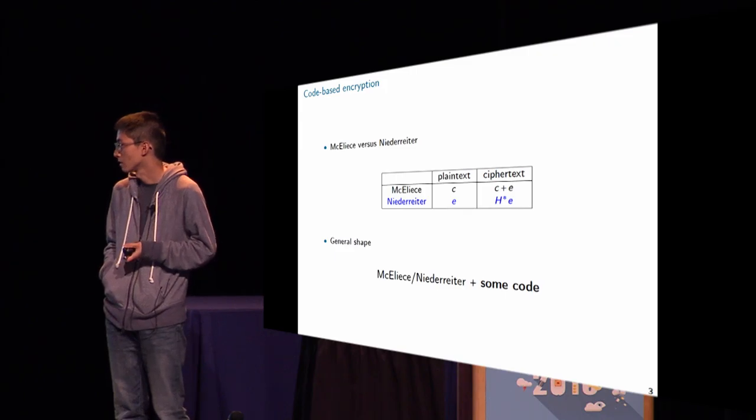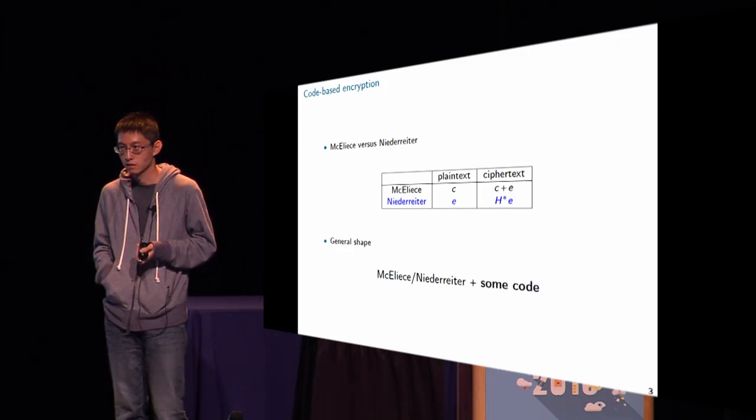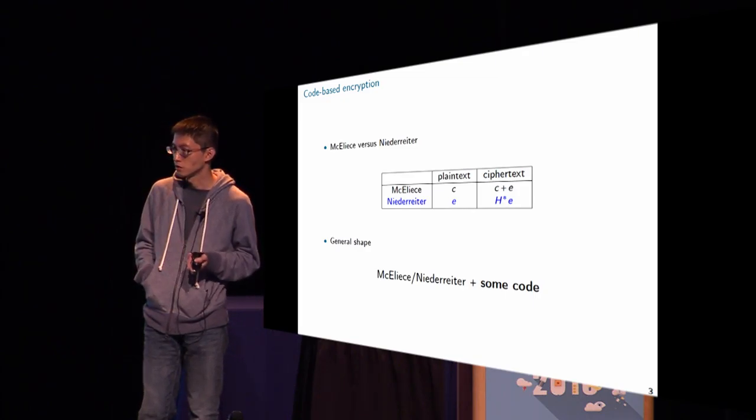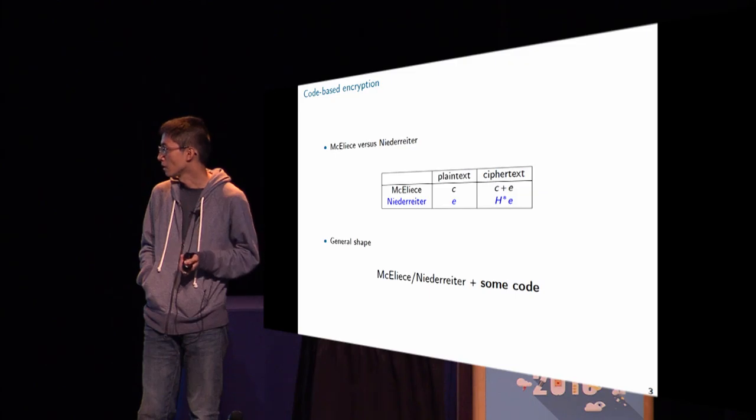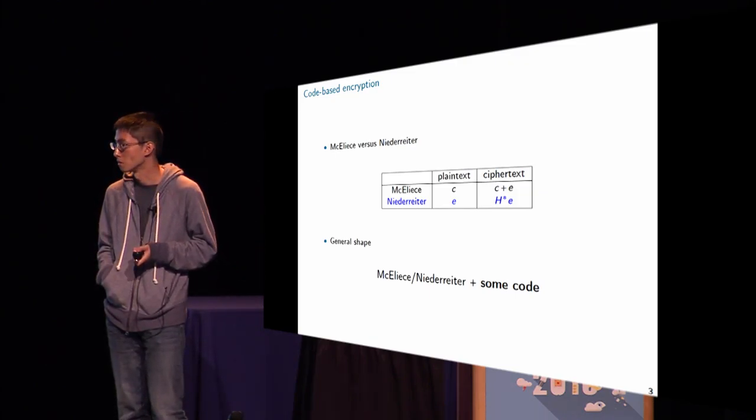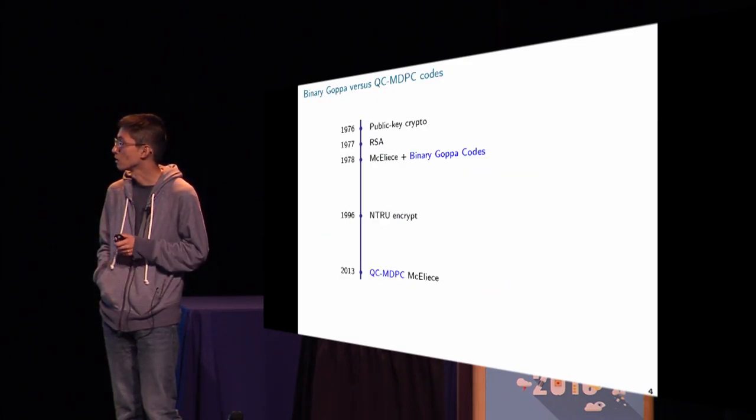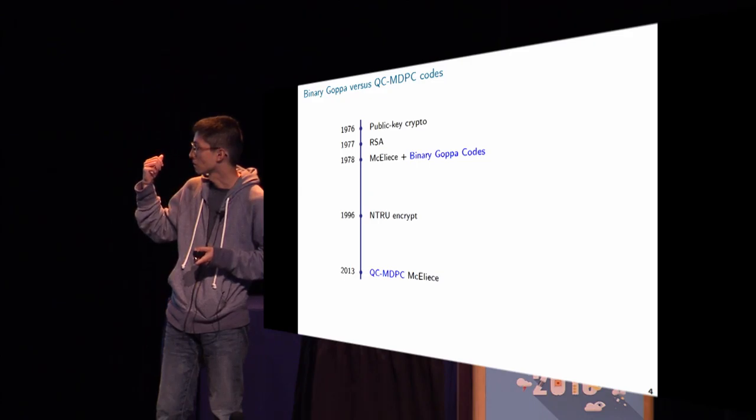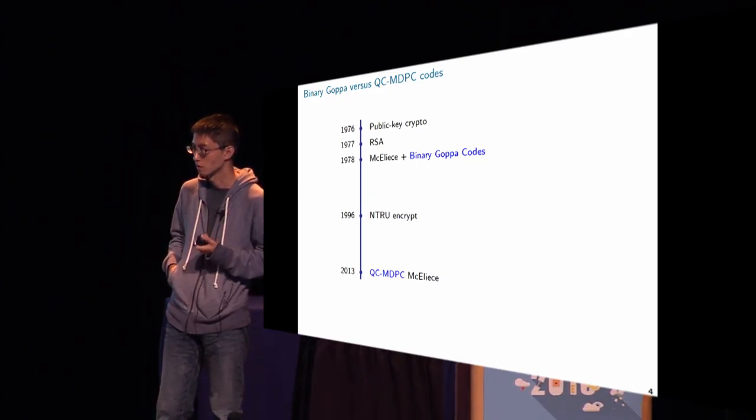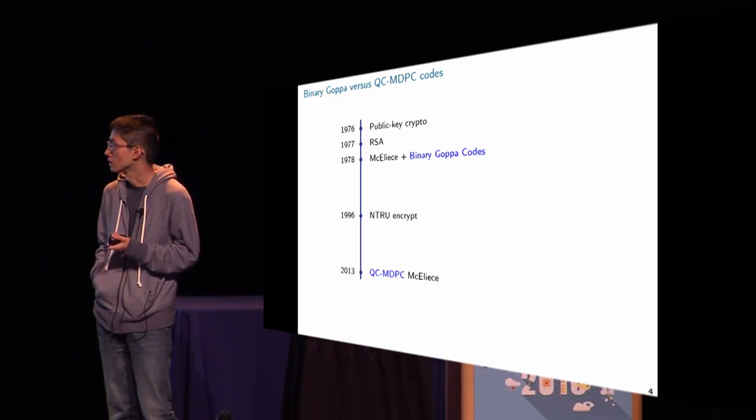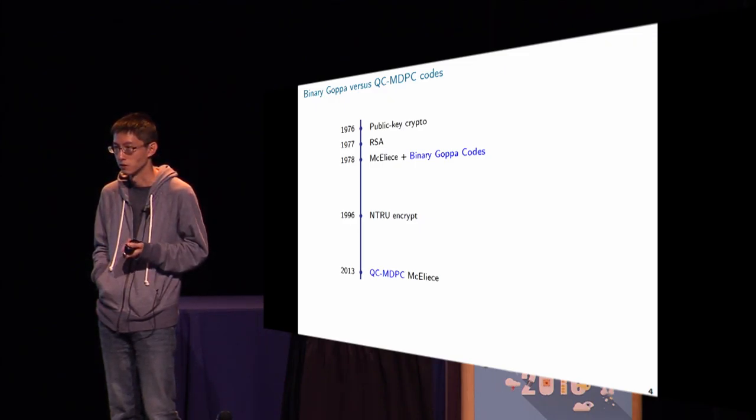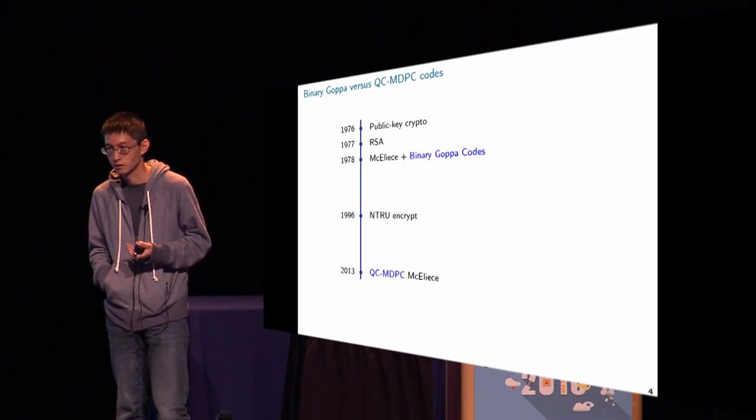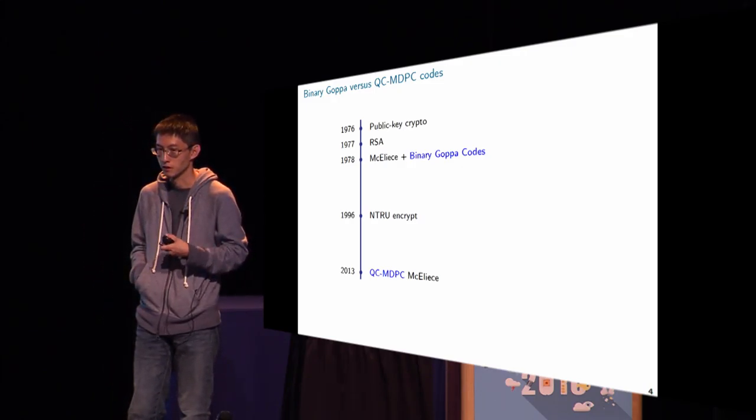So of course, since code-based crypto has been invented till now, many codes have been proposed to be used for code-based crypto. But unfortunately, many of them have been broken. But at least there are two noticeable codes that haven't been broken. And that's binary Goppa code and QC MDPC code. So here I have a timeline. The use of binary Goppa code in code-based crypto was proposed in 1978. You can see it's almost as old as public key crypto, a very long time ago. But for QC MDPC code, it was just introduced in 2013. So you can see there's a very big gap between the confidence we have in these two codes.